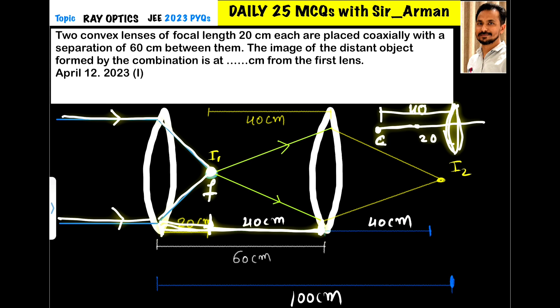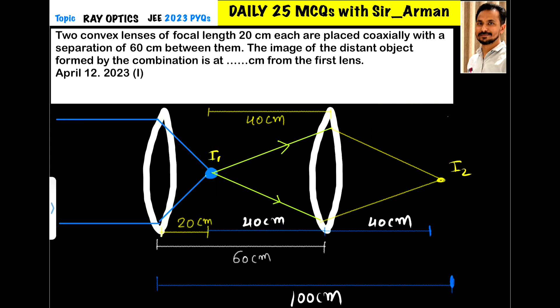Now if you place an object at a distance 40 centimeter, that is on the radius or on the center of curvature of the lens, then you will get image at the same distance on the other side. So here this image is at the radius of curvature, is at the center of curvature of the lens.